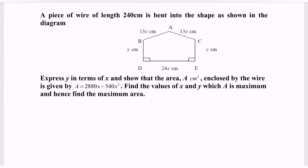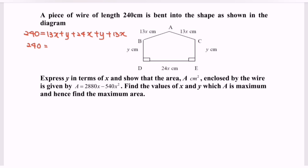We have to set up the situation where we have A to B is equal to 13x, plus B to D where we have Y, plus D to E where we have 24x, plus E to C where we have Y, and finally C to A where we have 13x. Simplifying: 240 equals 13x plus 24x plus 13x, so we have 50x plus 2y.